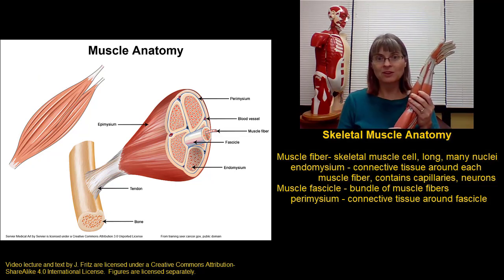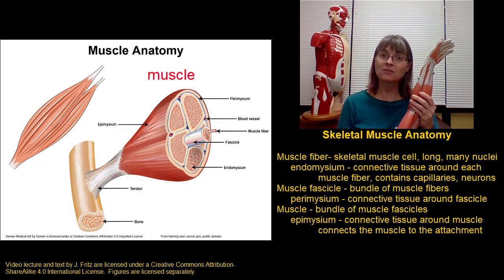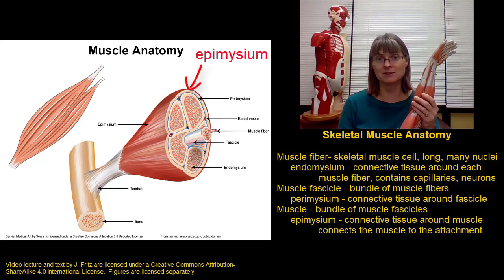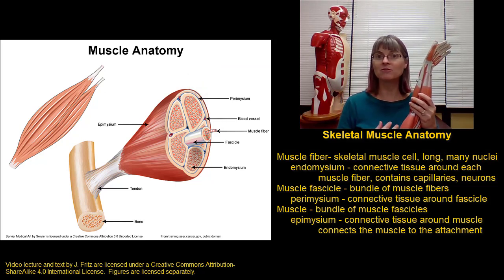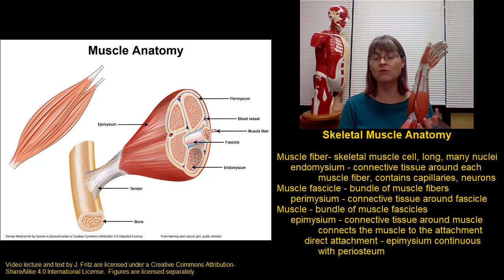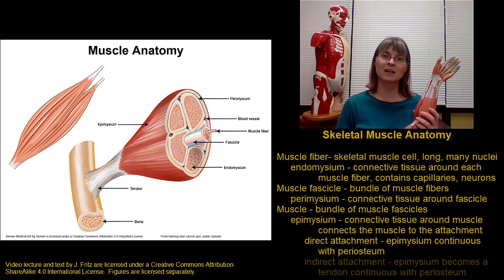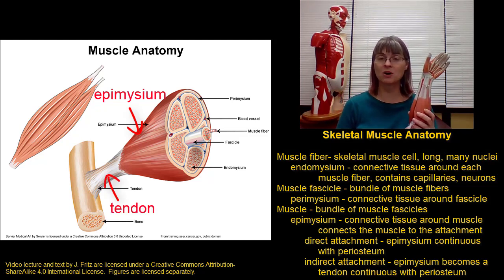We bundle these muscle fascicles together to make an actual muscle. The muscle has a layer of connective tissue around it called the epimysium, which is important not only to hold the muscle together but also to connect it to its attachments. In some cases we have direct attachment, where the epimysium merges directly into the periosteum of the bone. In the case of an indirect attachment, the epimysium rearranges into the dense regular connective tissue of a tendon, and the tendon then merges into the periosteum of the bone.